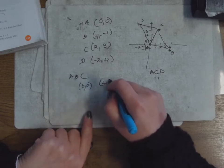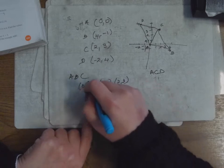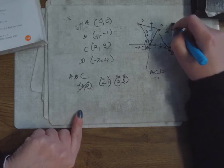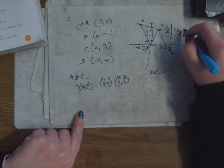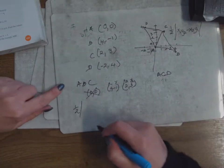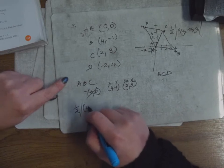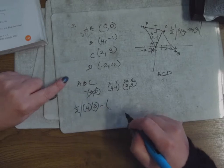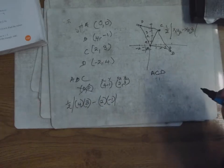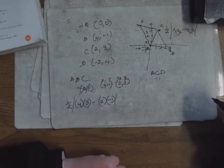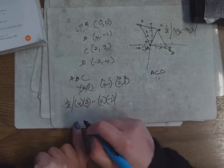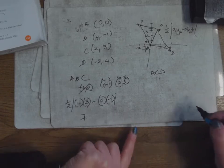A is (0,0), B is (4,-1), and C is (2,3). Ignore the origin — call this one x1 y1, x2 y2. The formula is: area = ½ |x1·y2 − x2·y1|. So that would be ½ |4×3 − 2×(−1)| — x1 is 4, y2 is 3, x2 is 2, y1 is minus 1. That's 12 plus 2, which is 14. Half of 14 is 7.